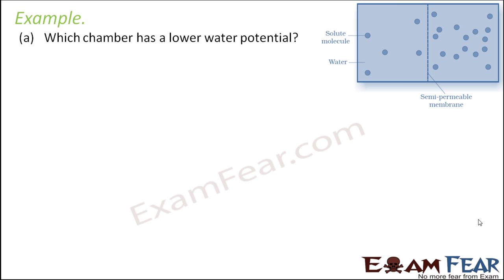Here you can see two chambers which are separated by a semi-permeable membrane. Whatever particles you can see, they are the solute particles and the remaining portion is all water. So which chamber has a lower water potential?